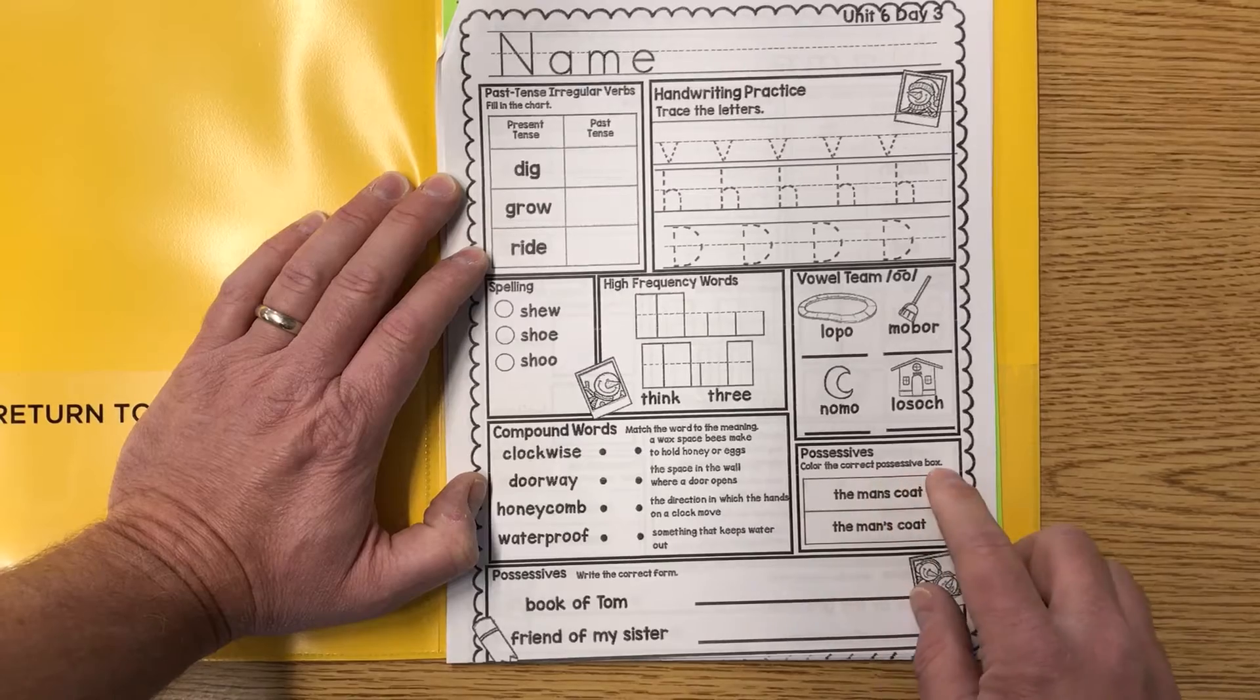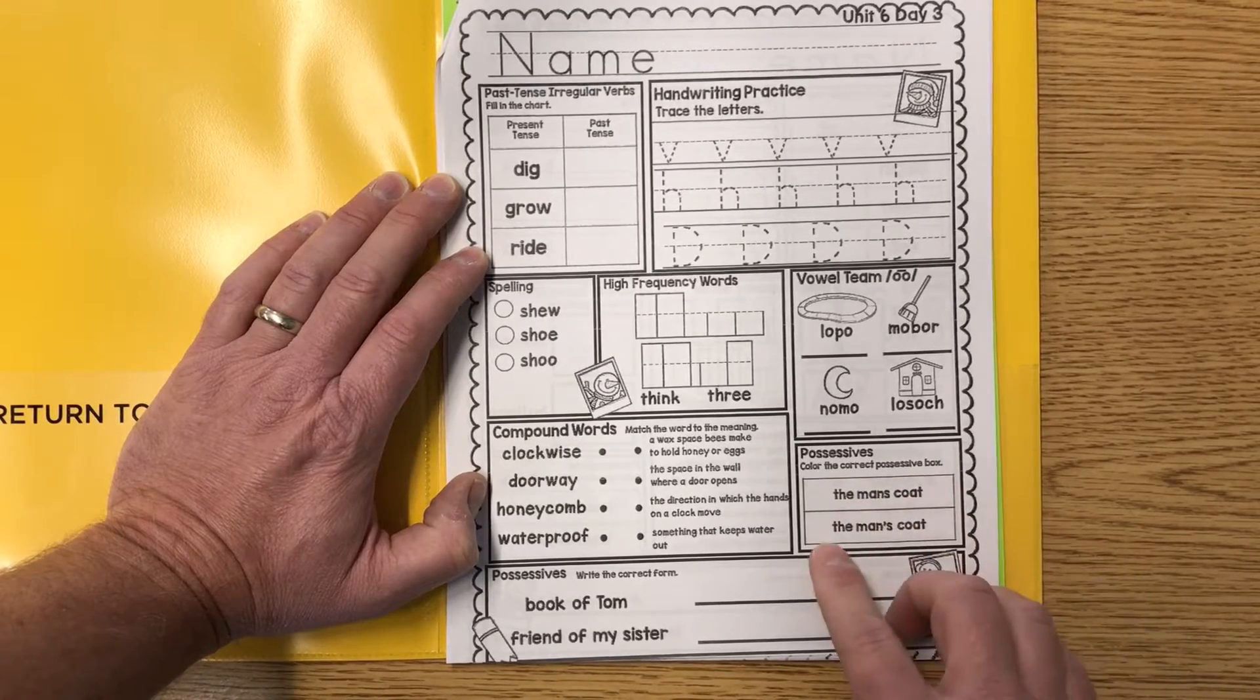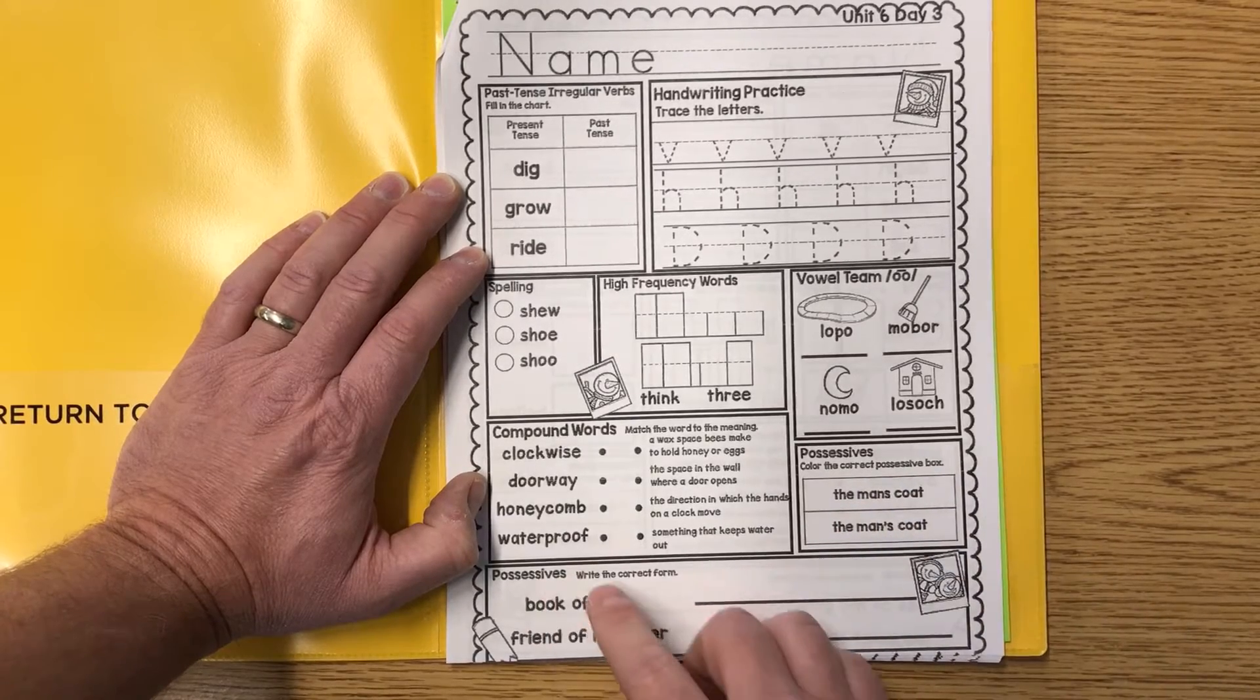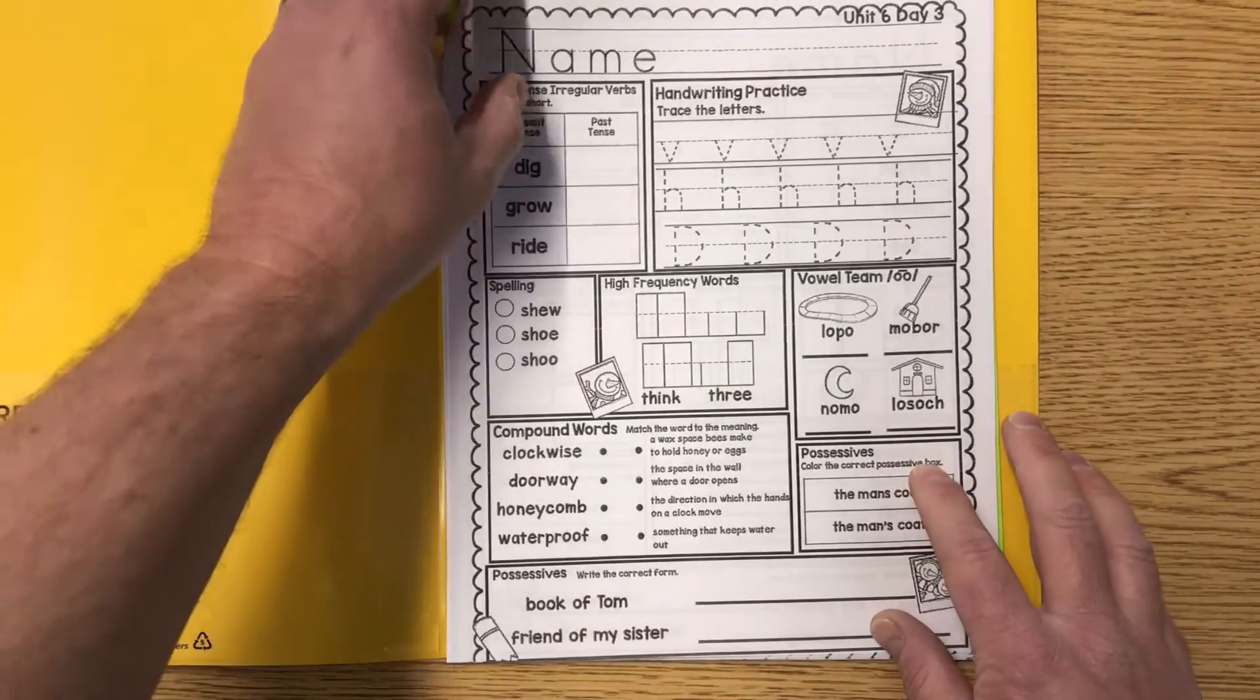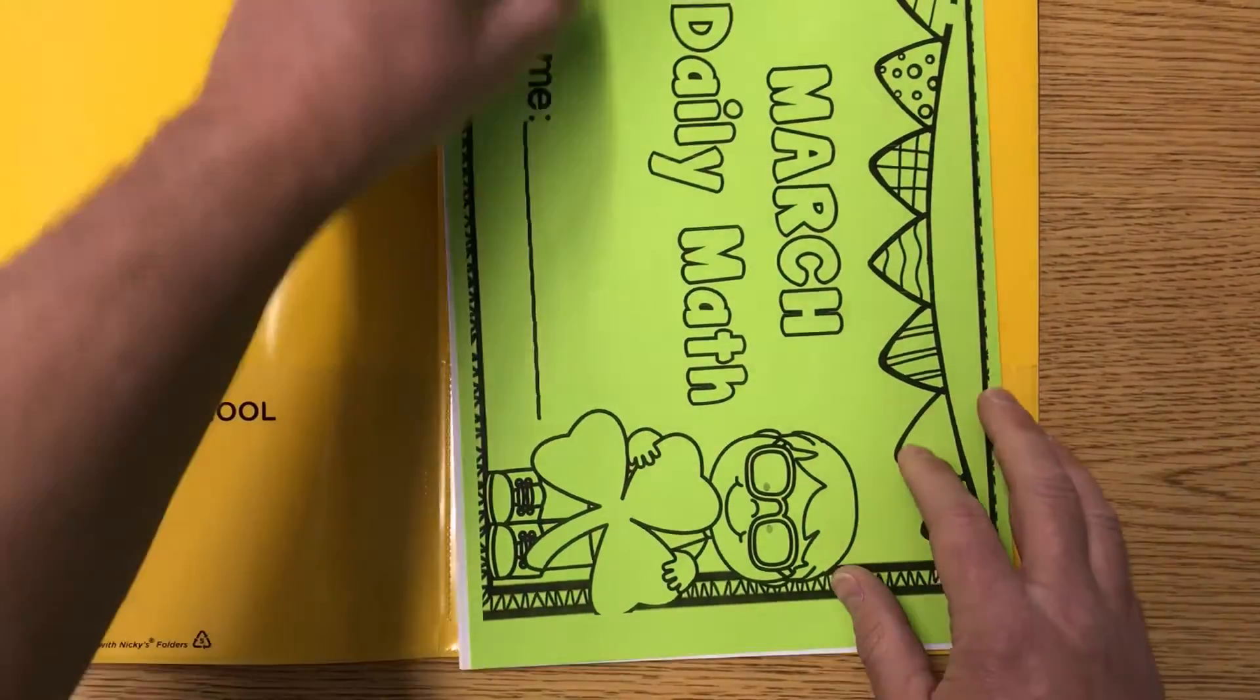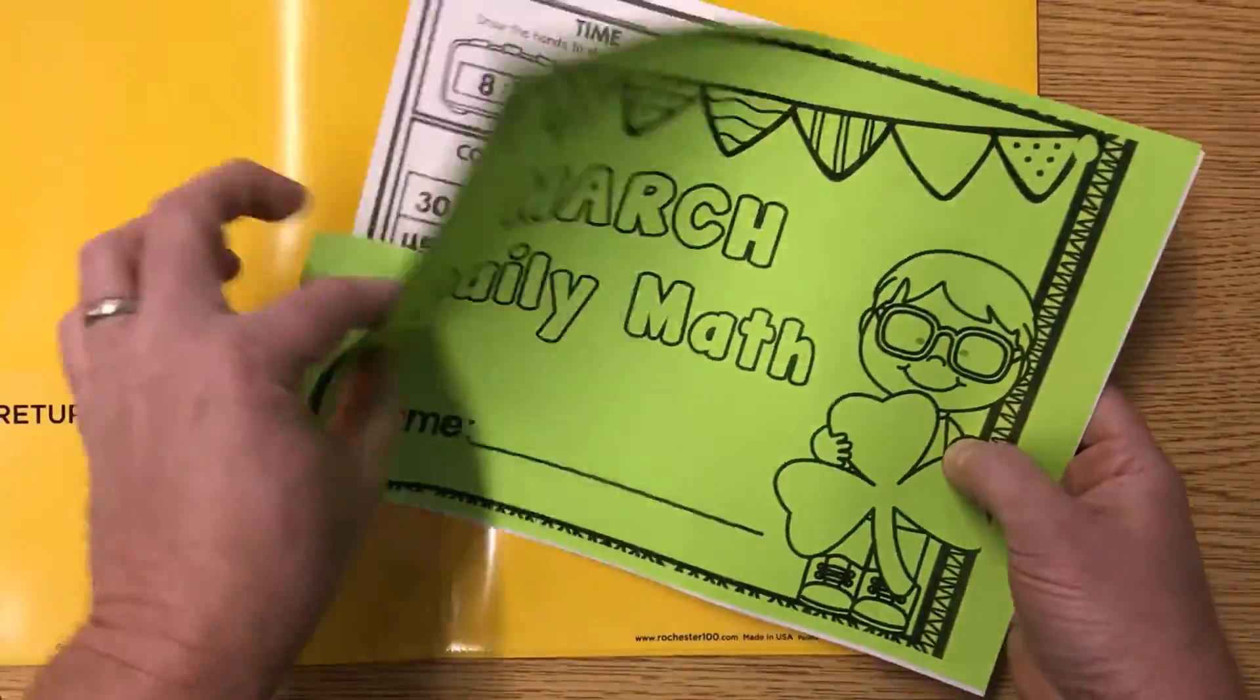Possessives. We have color the correct possessive box for the man's coat. Possessives. Write the correct form for book of Tom and friend of my sister. Alright. Let's go ahead and take a look at our math today.